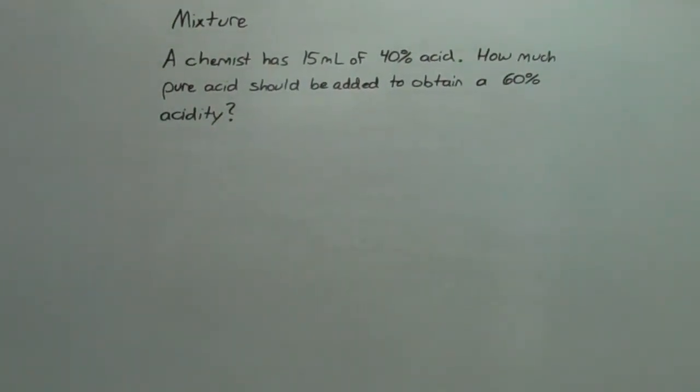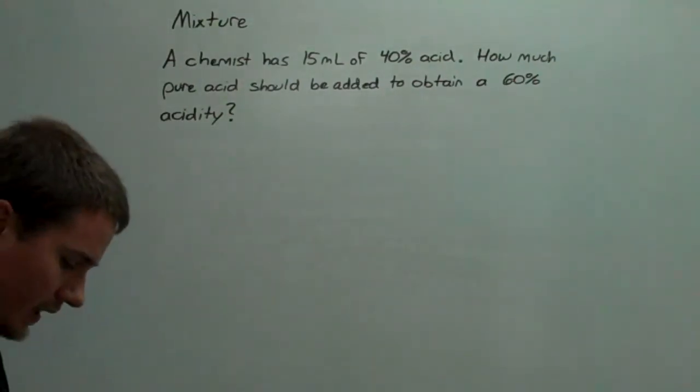All right, for our next problem in word problems, we're going to look at chemistry. So, a chemist has 15 milliliters of 40% acid. How much pure acid should be added to obtain a 60% acidity?